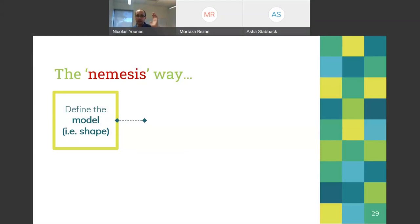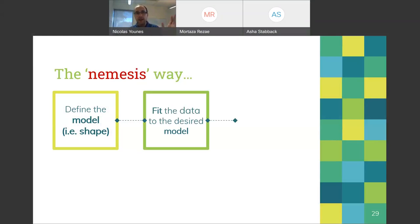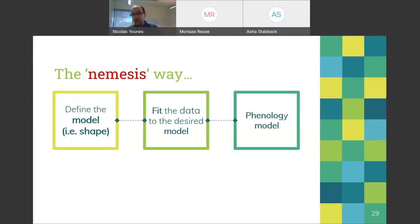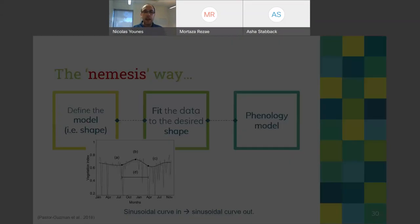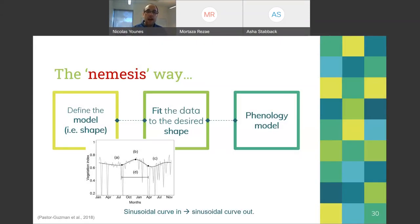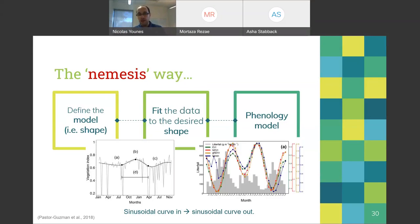But upon further analysis I found that in my view, people were doing it backwards. They were a priori defining what phenology should look like and then fitting the data to the model. My nemesis assumed a sinusoidal curve as the model — sinusoidal curve in, sinusoidal curve out. This might be okay for some applications but I don't think it's the most appropriate approach for mangroves.